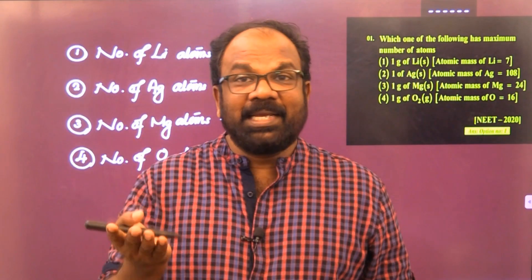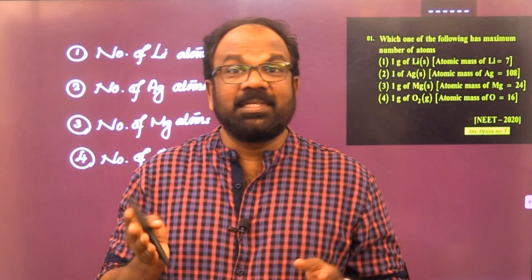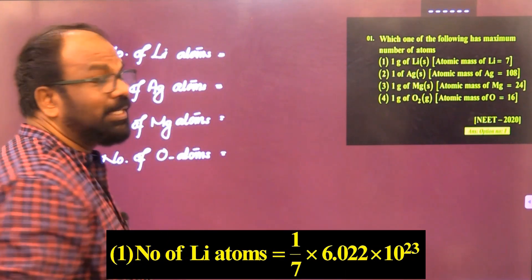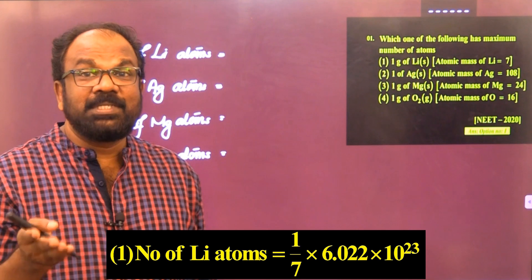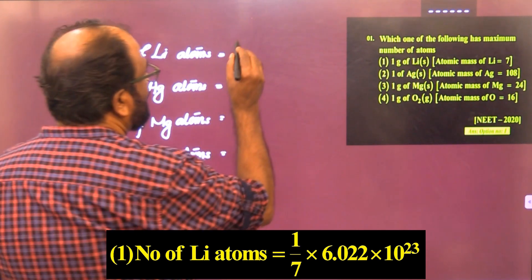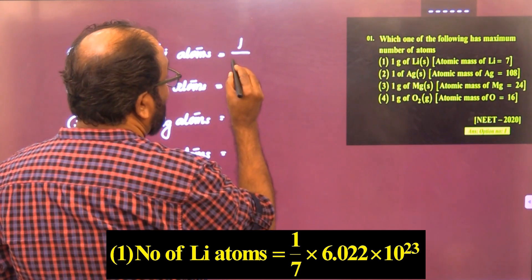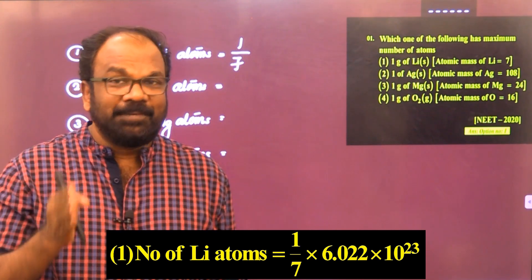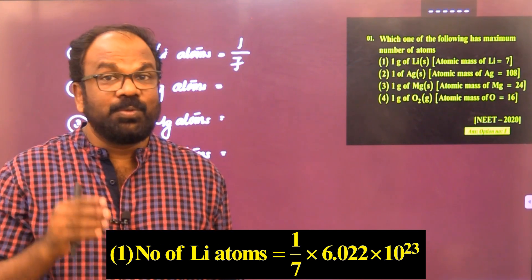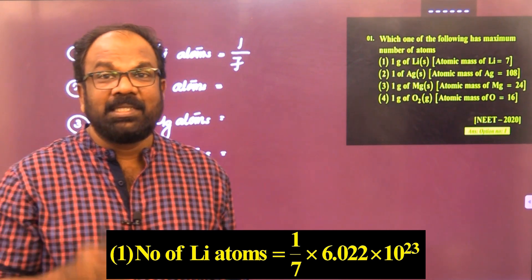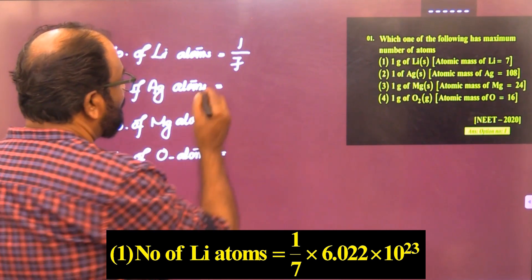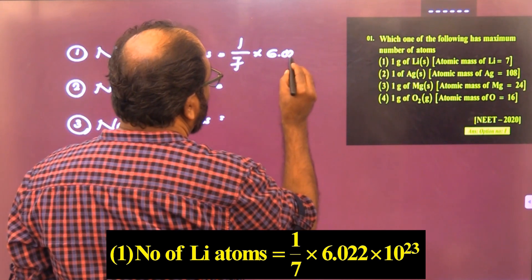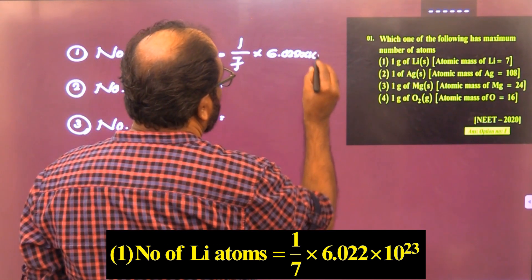We can calculate the number of atoms present in each option. In option 1, one gram of lithium is given, so the number of moles = 1g / 7g (gram atomic mass). We know one mole of any substance contains 6.022 × 10²³ particles, so the number of atoms in option 1 = (1/7) × 6.022 × 10²³.